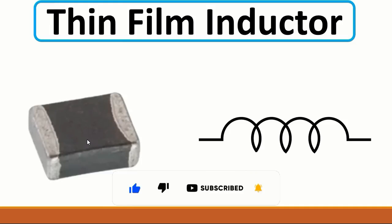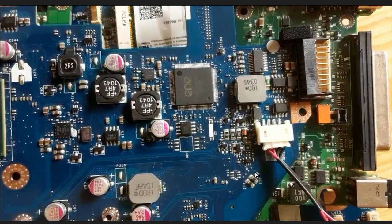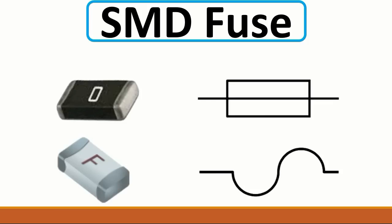Then we have another kind of inductor — the thin film inductor, exactly like we have here for this one and others like it. Also, we have ACM fuses. It has two symbols: this symbol with a line here, or this symbol. Here 'F' means fuse.